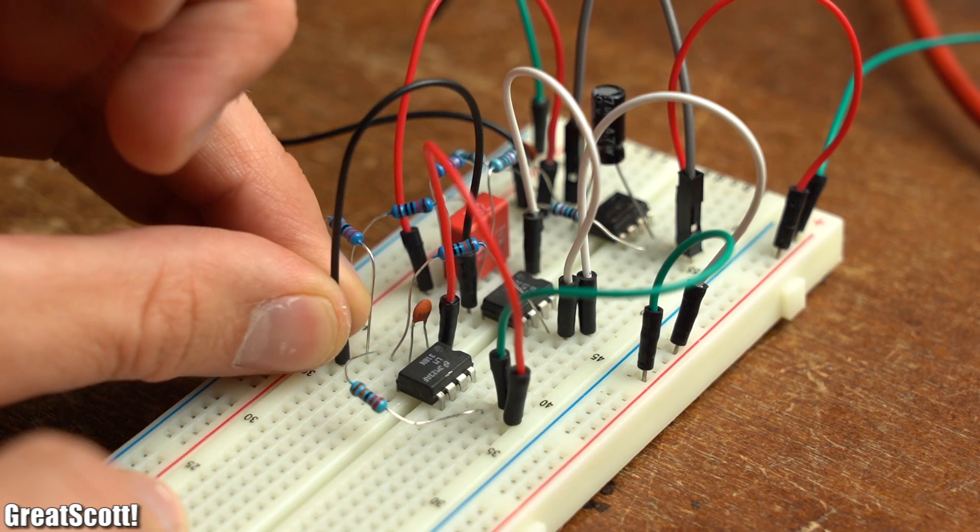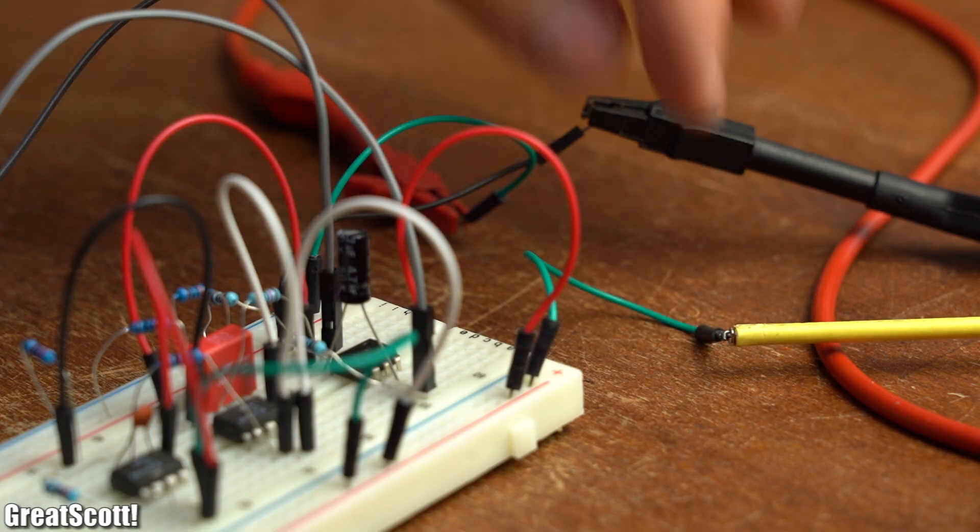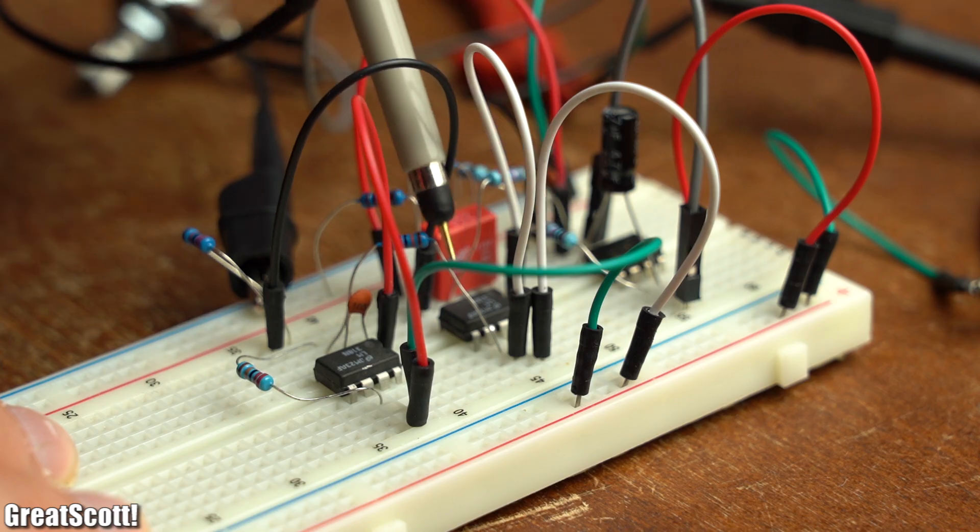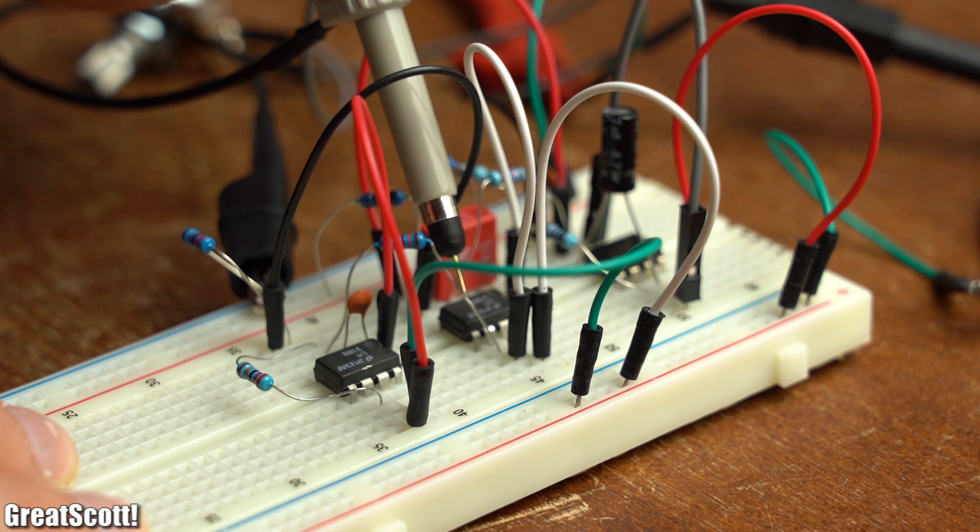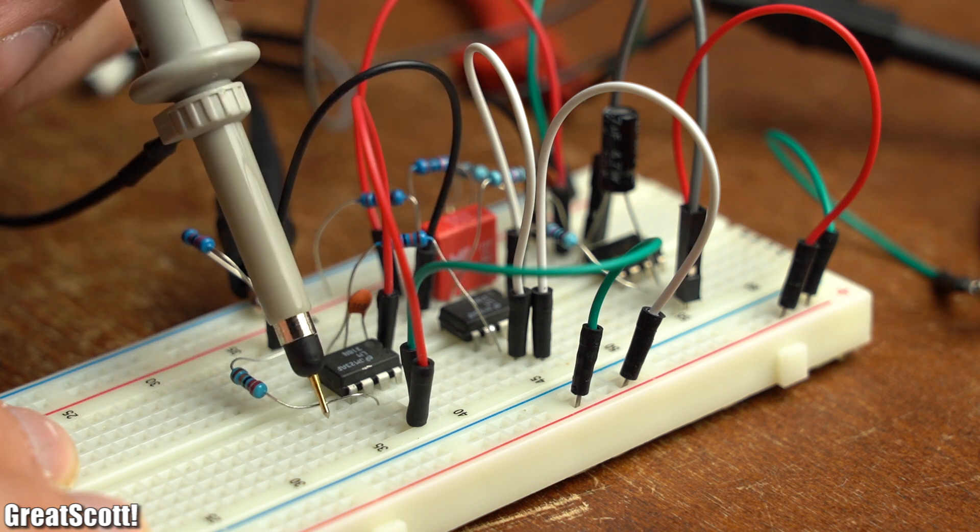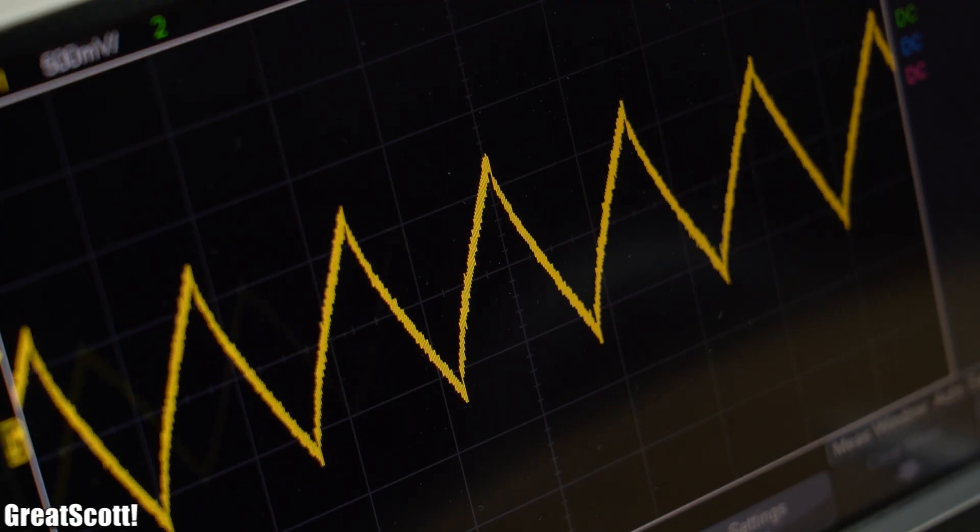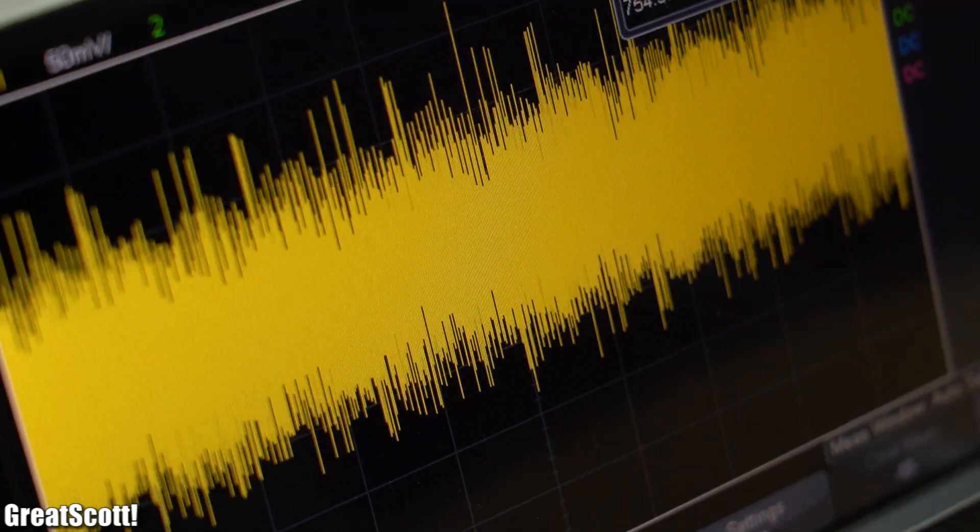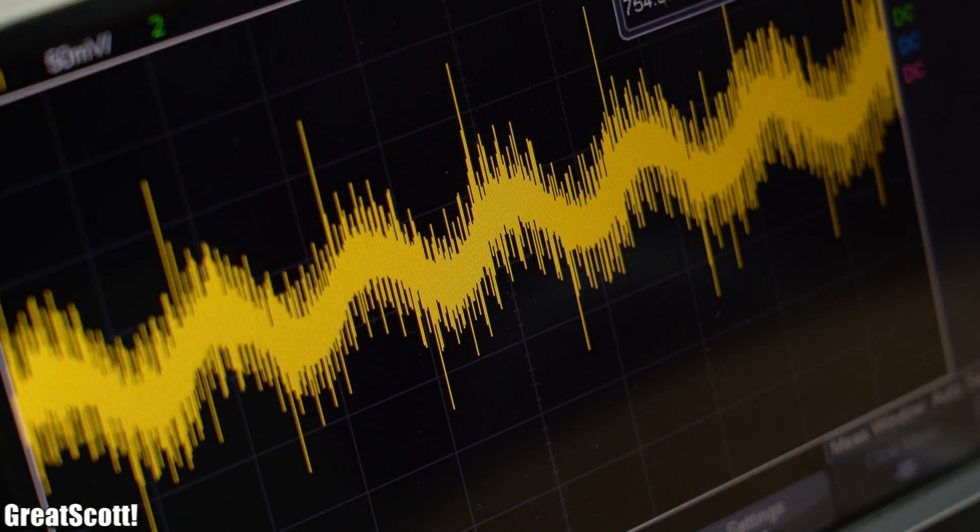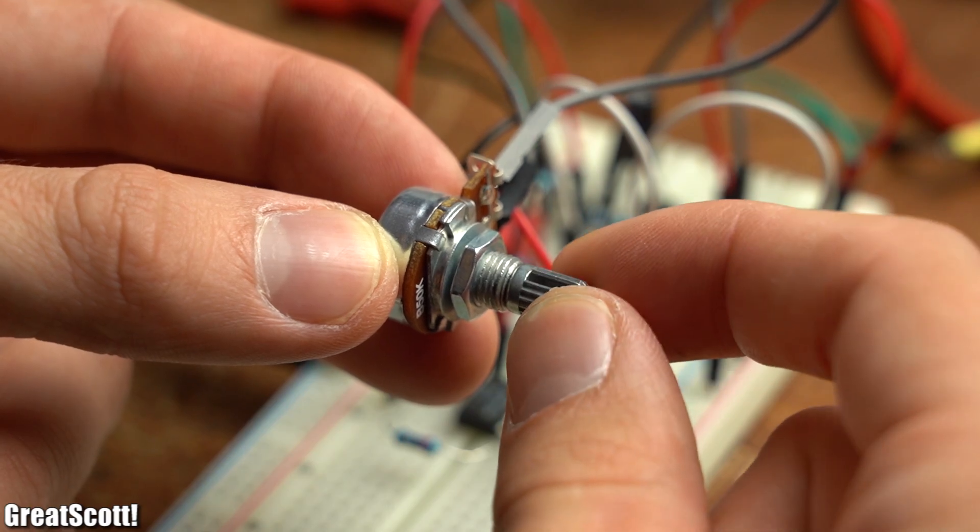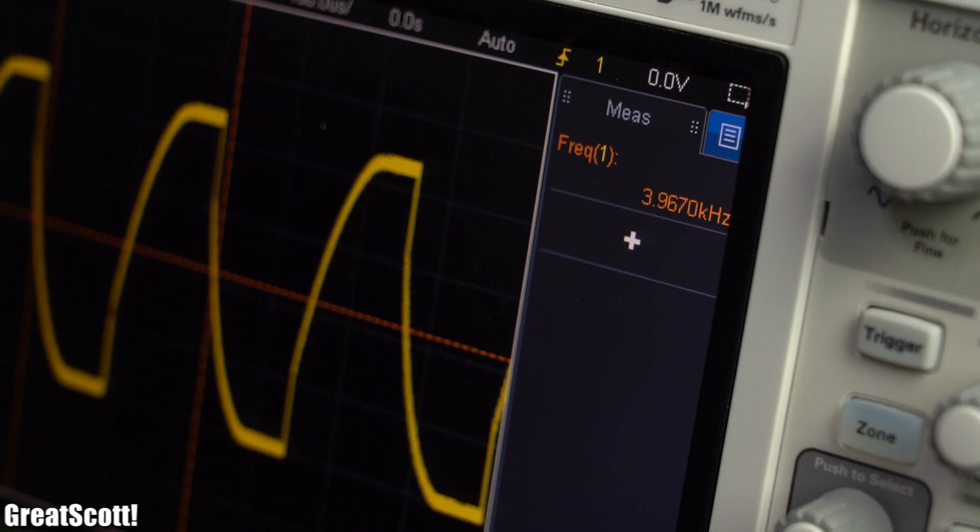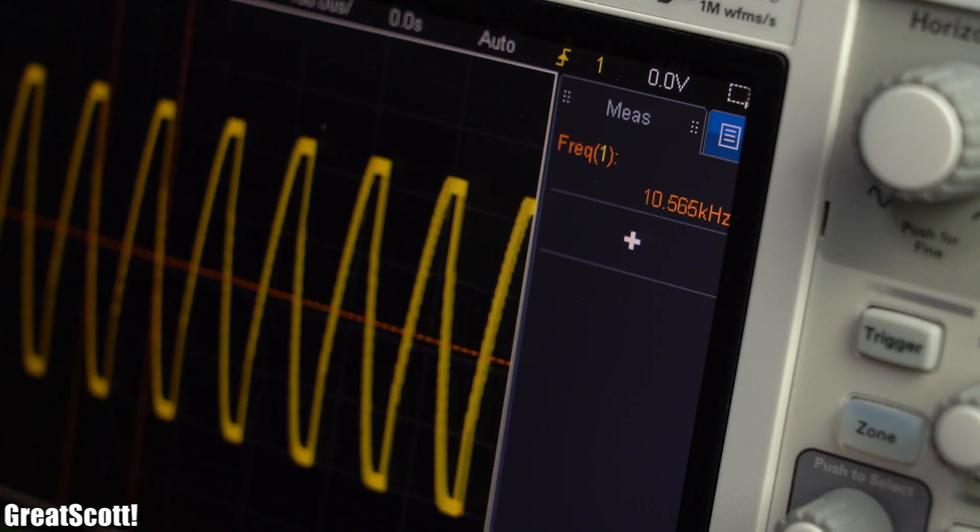After building the circuit up on a breadboard and powering it, we can use an oscilloscope to probe each op-amp stage, to find out that the first one creates a supposedly square wave, the second one a triangle wave, and the third one a sine wave. And by adjusting the potentiometer at the first stage, we can also adjust the frequency of the waveforms.